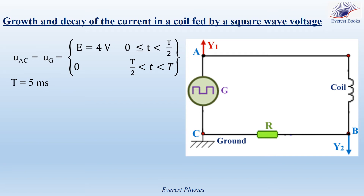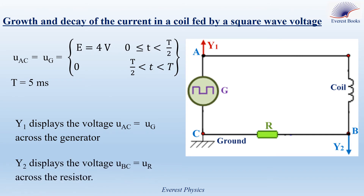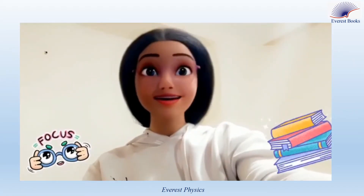The ground of the oscilloscope is connected to point C, and the phase of channel 1 is connected to point A. So channel 1 displays the voltage UAC, equal to UG, across the generator. The phase of channel 2 is connected to point B, so channel 2 displays the voltage UBC, equal to UR, across the resistor. Focus, please — this is important.